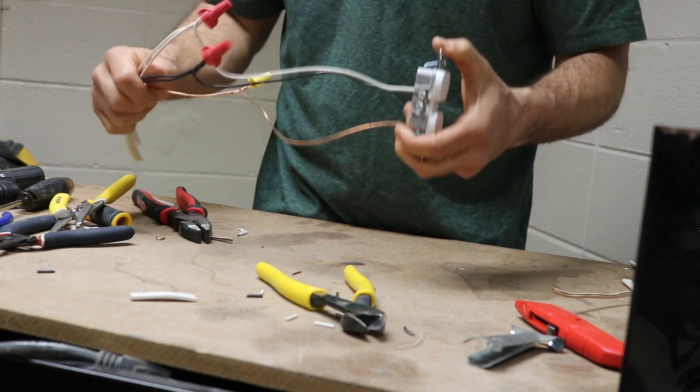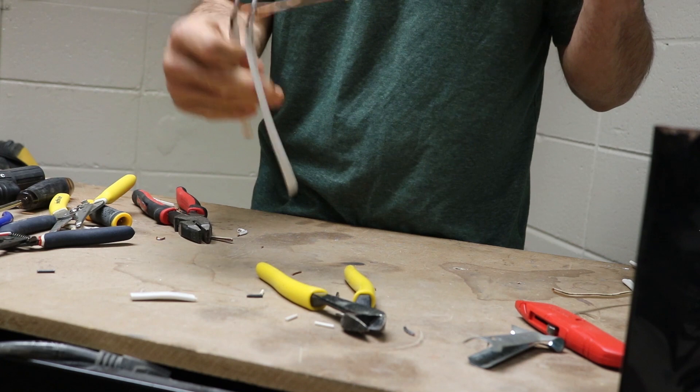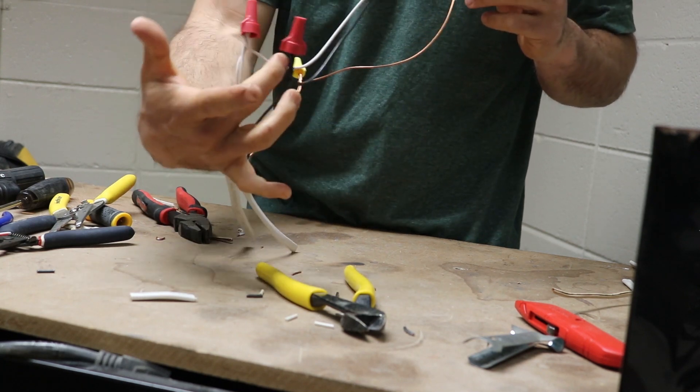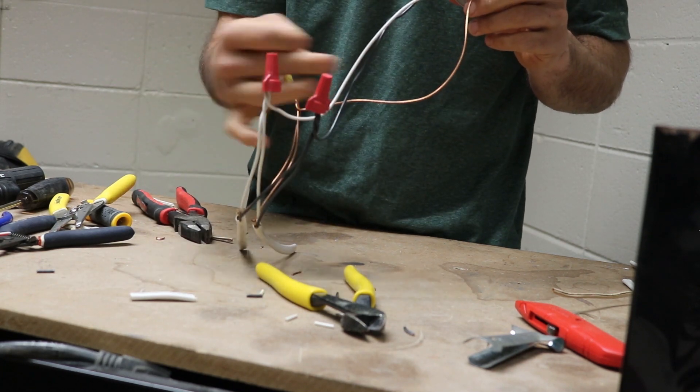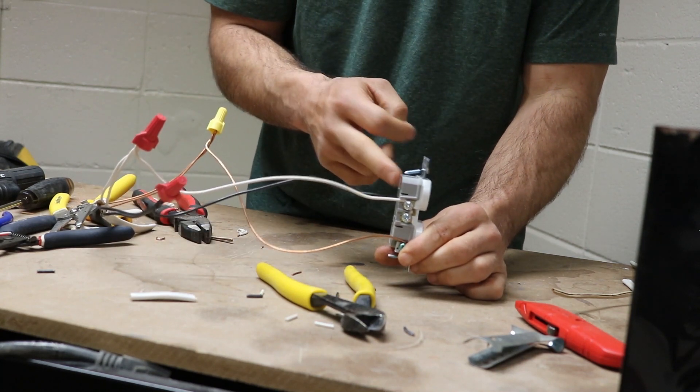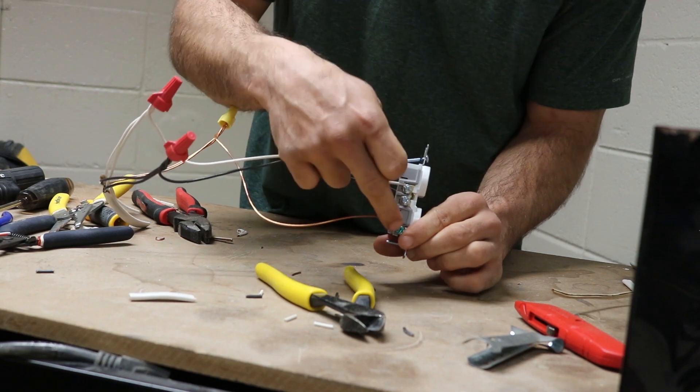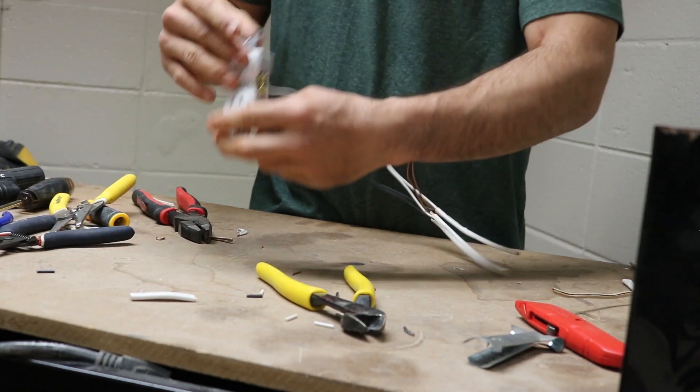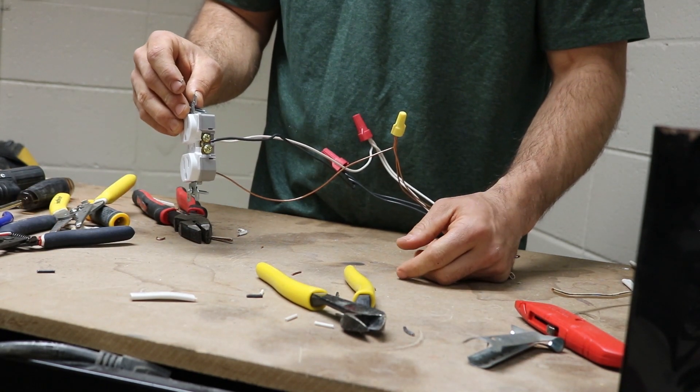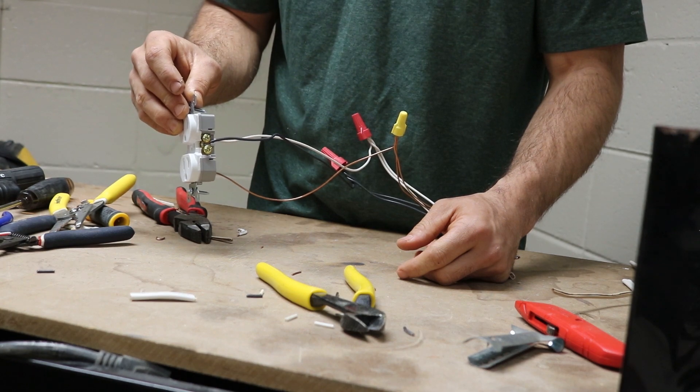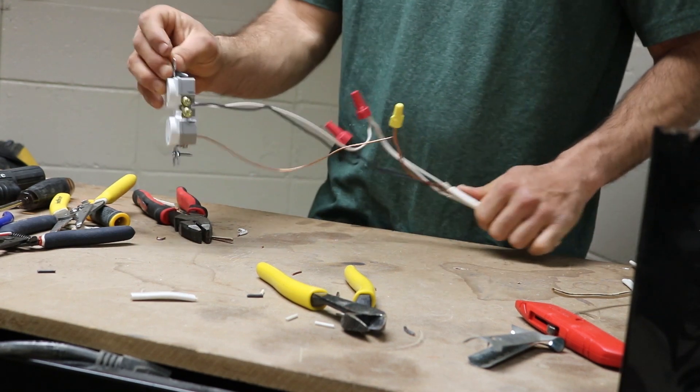So on your finished project, you should have two cables with a jumper wire coming off each one. And your jumper wire will attach to your receptacle. White will go to silver, green will go to your green, and then your black wire will go to your gold screw.